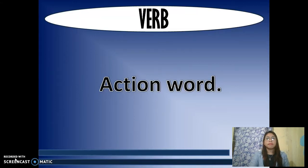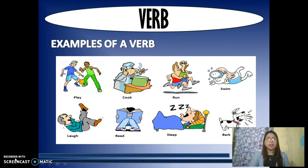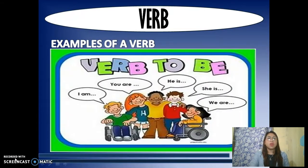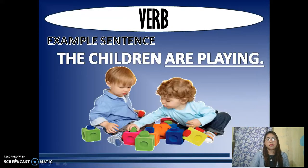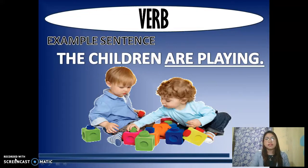Another part of speech is verb, which is an action word. A verb shows an action or state of being — what someone or something is doing. Examples include: play, cook, run, swim, love, read, sleep, bark. We also have be-verbs like are, is, were, and was. In the sentence 'The children are playing,' the verbs are playing and are — where are is a helping verb that adds detail to how the action is conveyed.